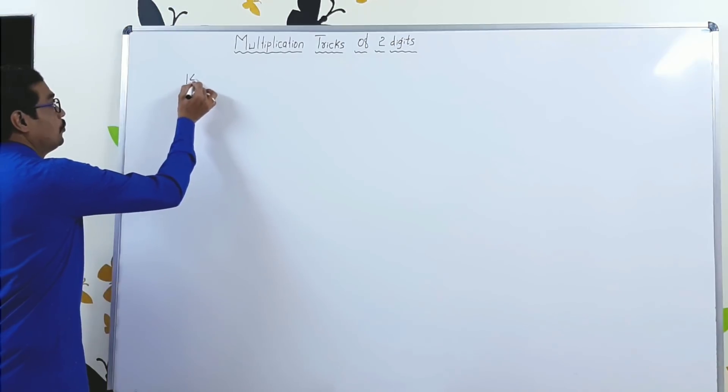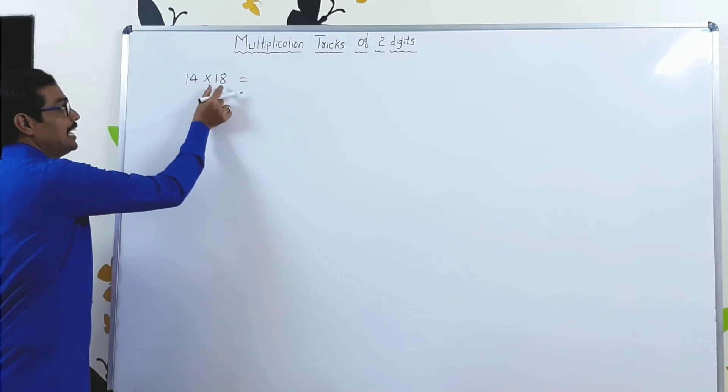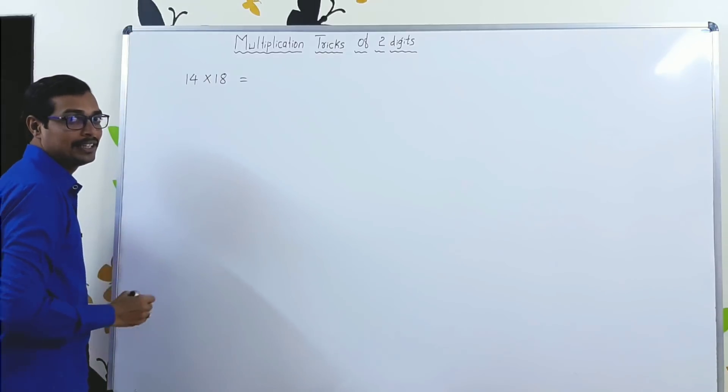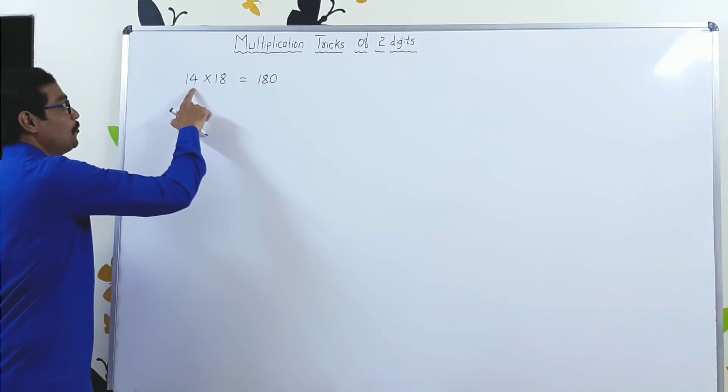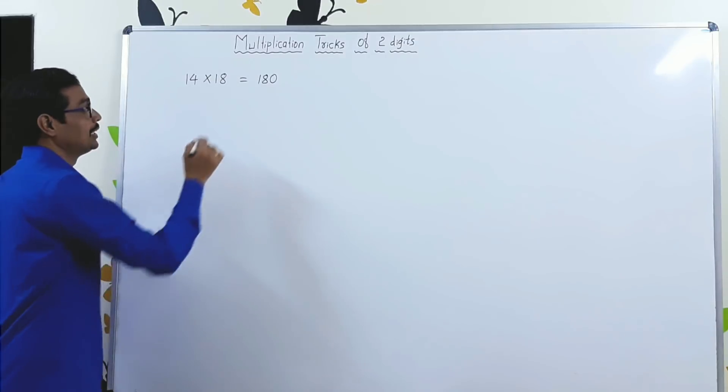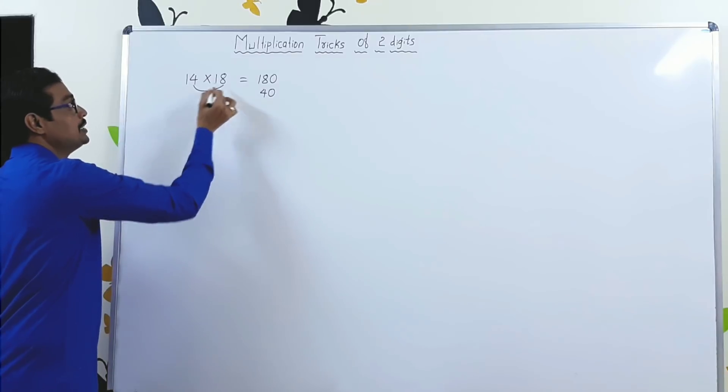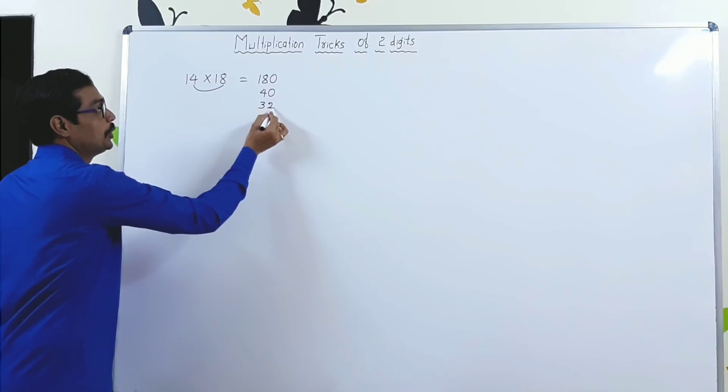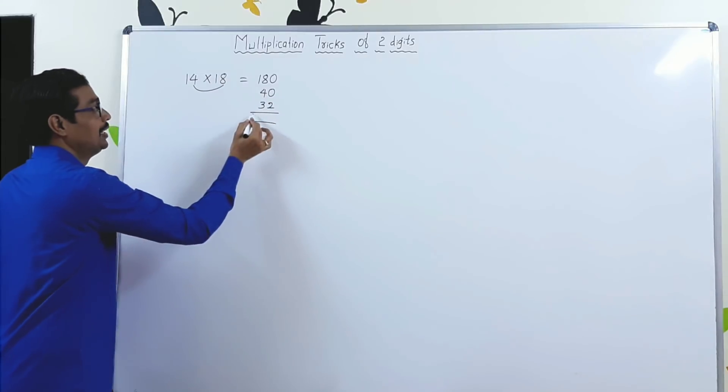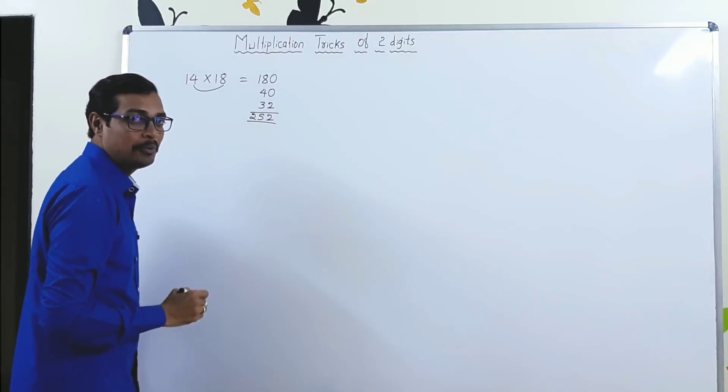Let's get started. 14 × 18. 18 × 10 is 180. 4 × 10 is 40. You need digits. We have to multiply. 4 × 8 is 32. So total is 252.